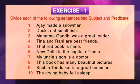The exercises that you can expect from this chapter are: divide each of the following sentences into subject and predicate. 1. Ajay made a snowman. 2. Ducks eat small fish. 3. Mahatma Gandhi was a great leader. 4. Tina and Rani are best friends. 5. That red book is mine. 6. New Delhi is the capital of India. 7. My uncle's son is a doctor. 8. This book has many beautiful pictures. 9. Sachin Tendulkar is a great batsman. 10. The crying baby fell asleep.